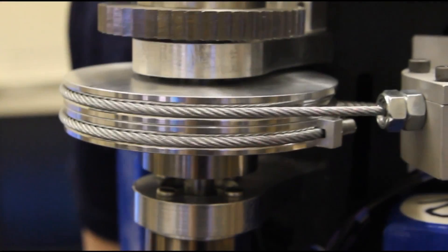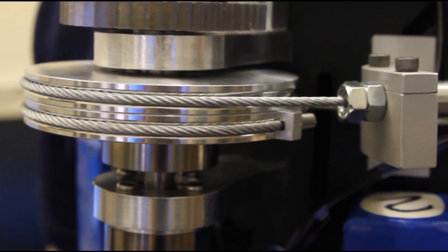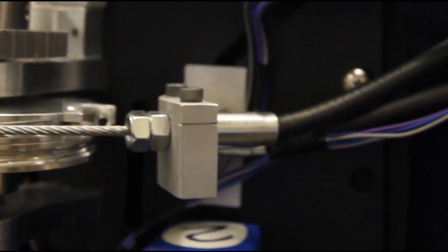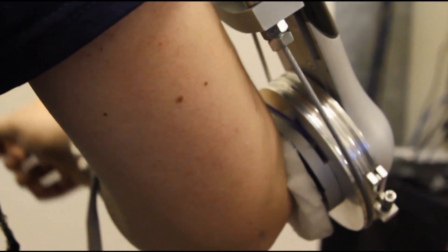The actuation system augments the user's strength. The DC motor located on the user's back is connected to a cable drive which translates motion to the elbow. This works just like the brake cables on a bicycle in that they are flexible but strong.